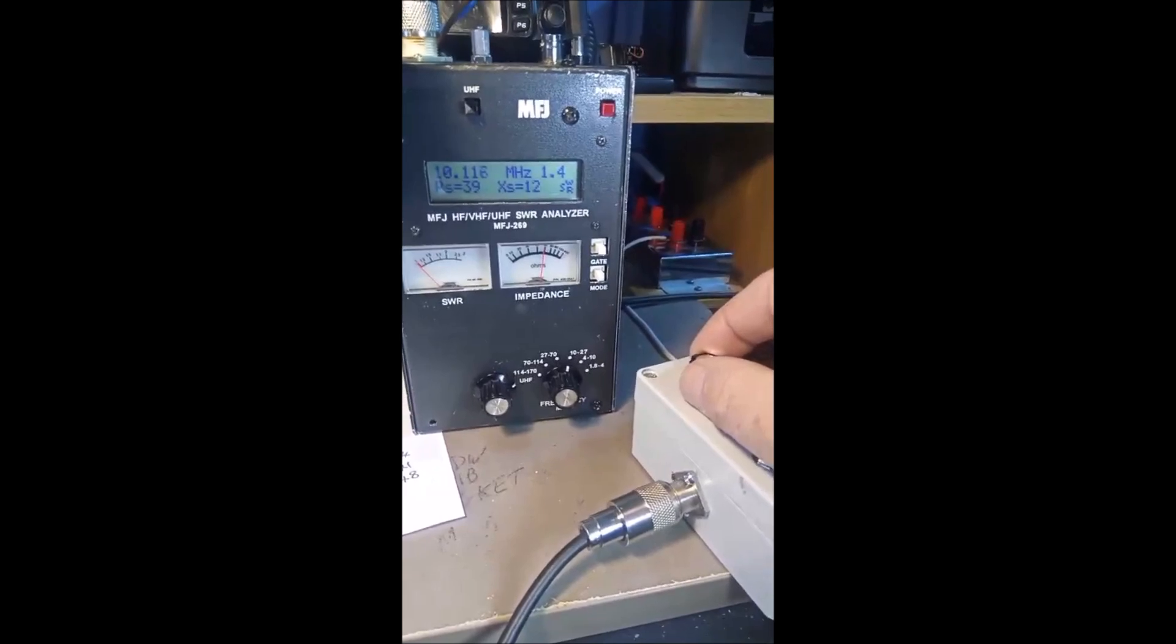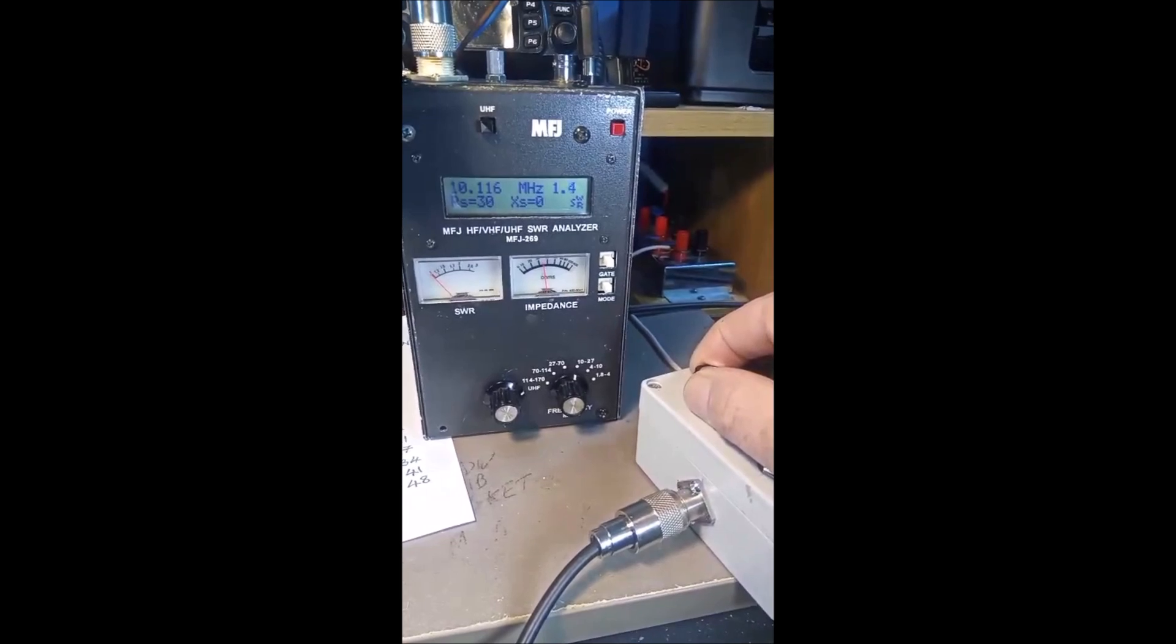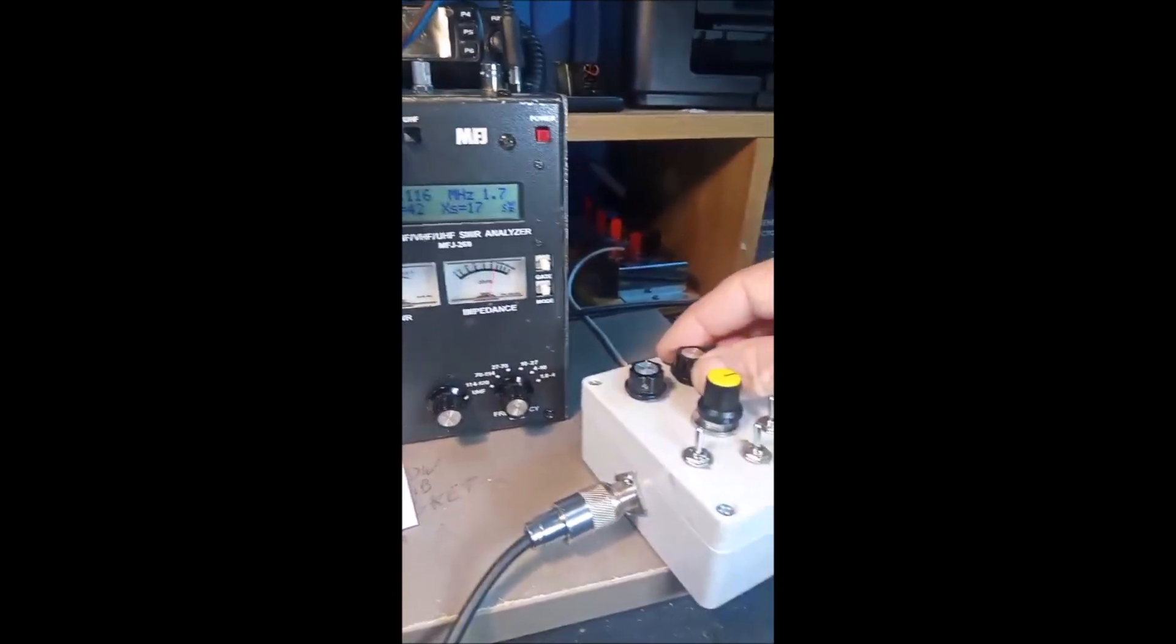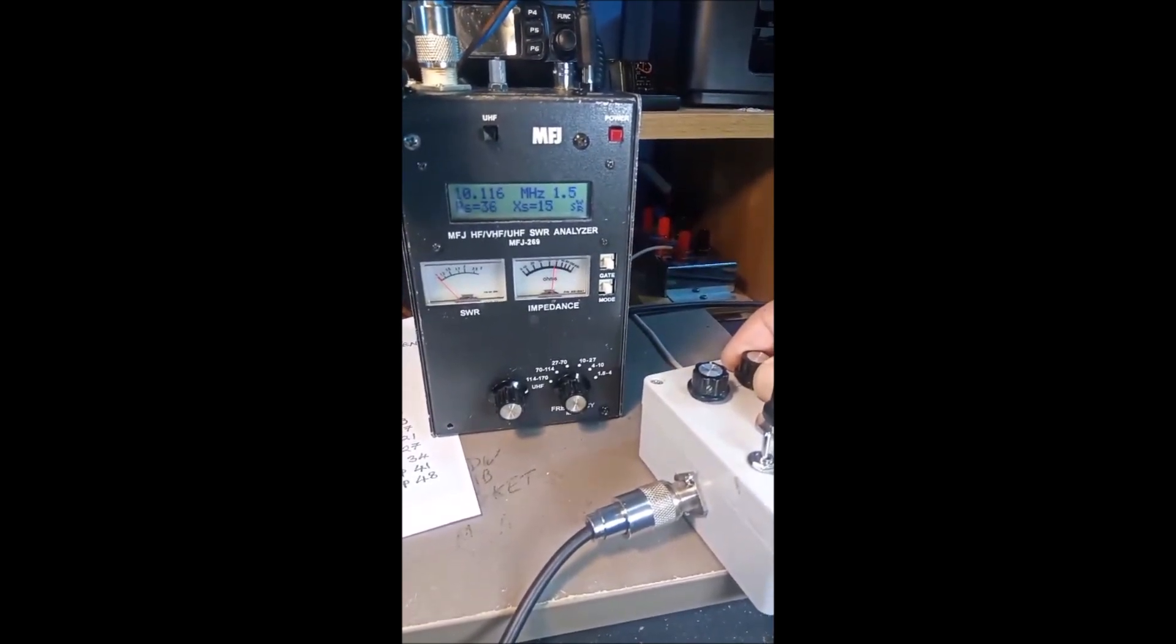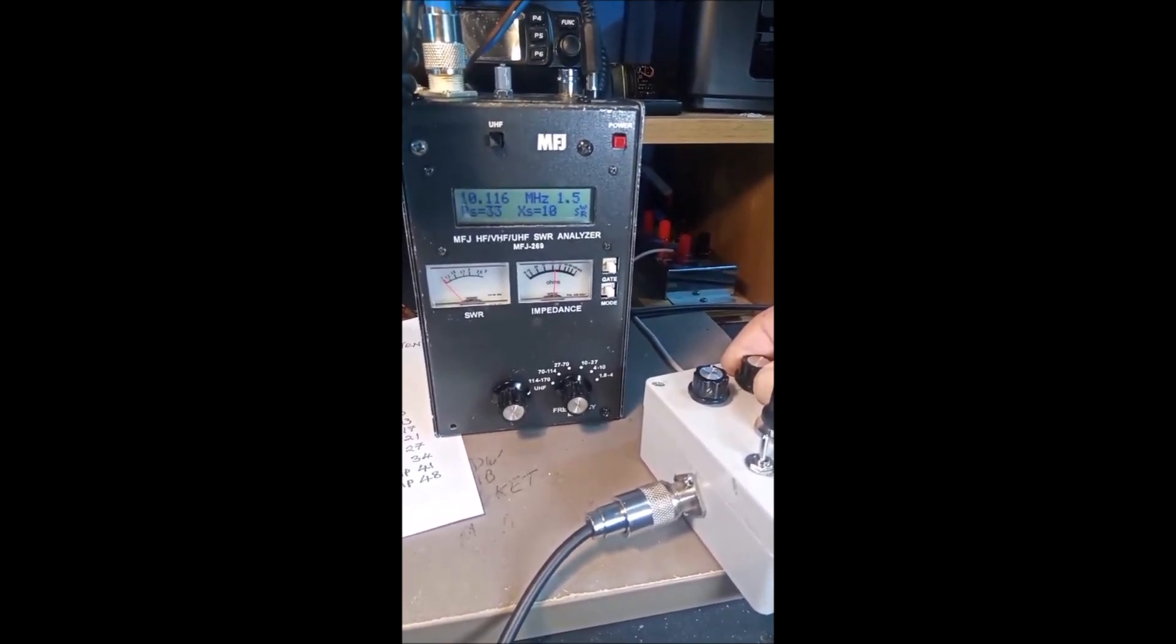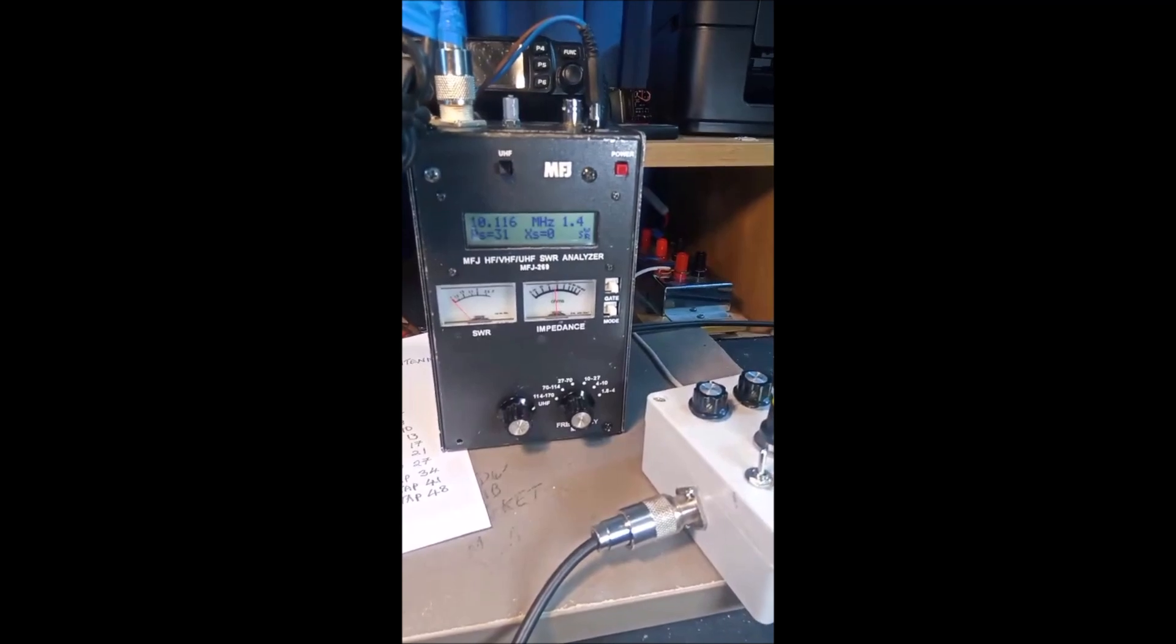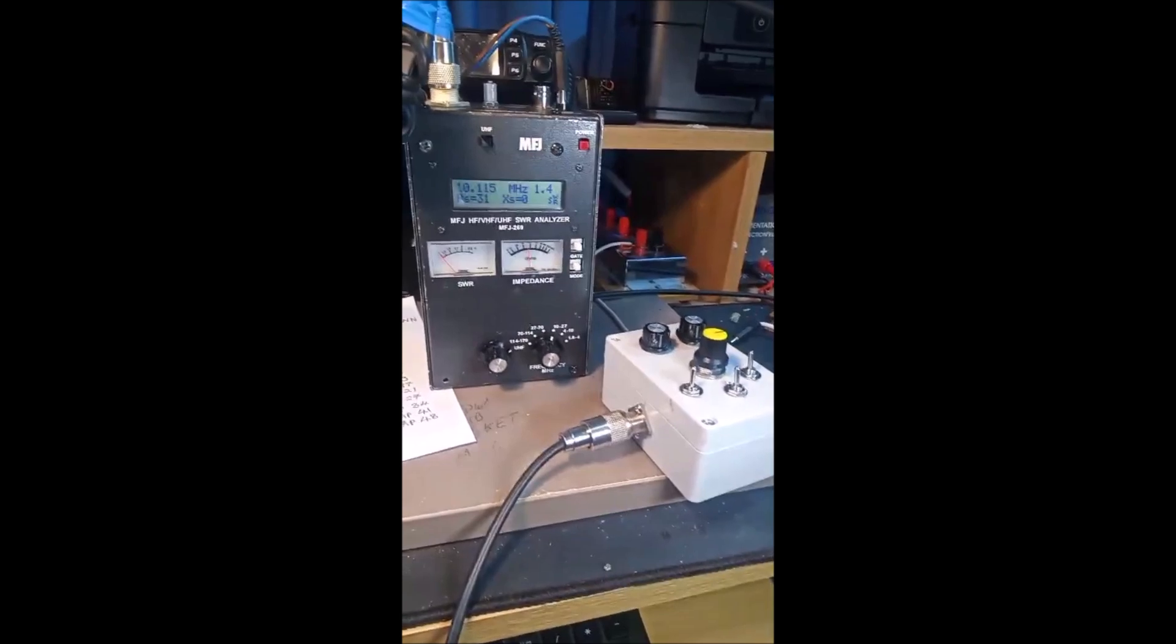There, 1.4, 1.3. If I didn't have the camera here I'm sure I'd get it down lower, but you can see there how well it works. I'll try the other one here. They're interdependent. So I could work away there and get a 1.4 to 1 SWR on the 30 meter band using my 40 meter dipole.